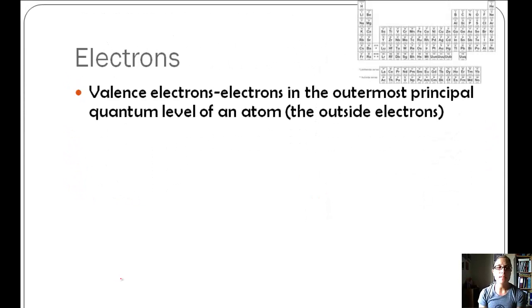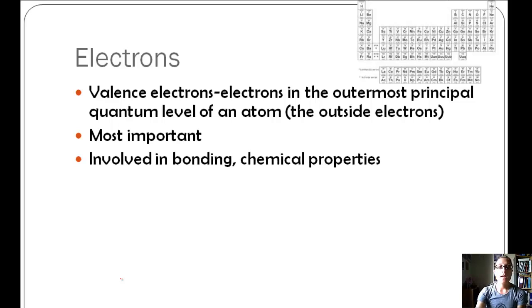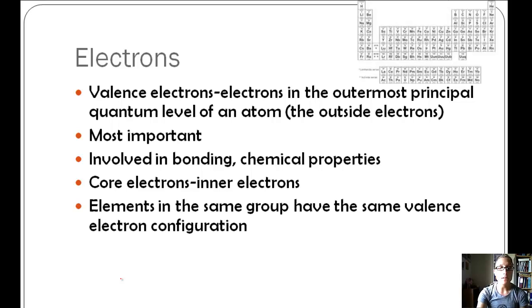We also need to talk about valence electrons, which are the most important electrons because they're on the outside, and they are used in bonding. They also determine some of the chemical properties for our atoms. Then we also have these core electrons, which are basically the inner electrons, or the ones that do the shielding.